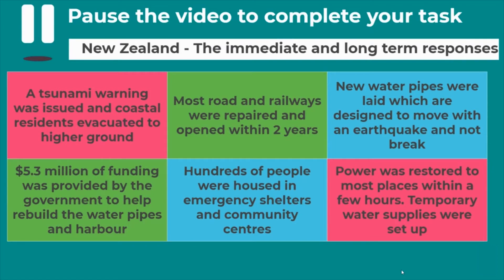We're going to look first at the immediate and long-term responses in New Zealand — three of each. Read through them and add them to your table. A tsunami warning was issued and coastal residents were evacuated to higher ground. Most roads and railways were repaired and opened within two years. New water pipes were laid, designed to move with an earthquake and not break. $5.3 million of government funding was provided to help rebuild the water pipes and the harbour. Hundreds of people were housed in emergency shelters and community centres. Power was restored to most places within a few hours. Temporary water supplies were set up.